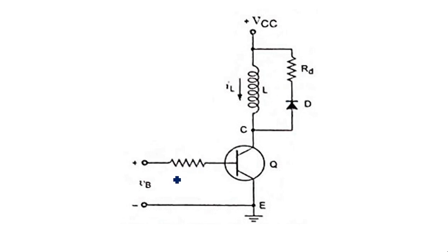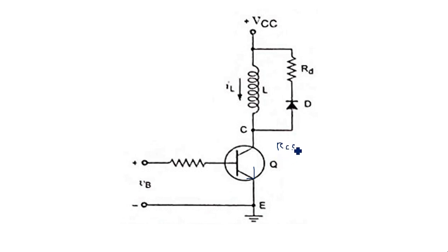When a positive-going pulse is applied at the base of transistor Q, the transistor comes into the ON state because it has sufficient input voltage. As the transistor turns ON, the inductor current IL flows from VCC through L and then through the ON resistance of the transistor, which is the collector-to-emitter saturation resistance RCE or RCES. The inductor then begins to charge.